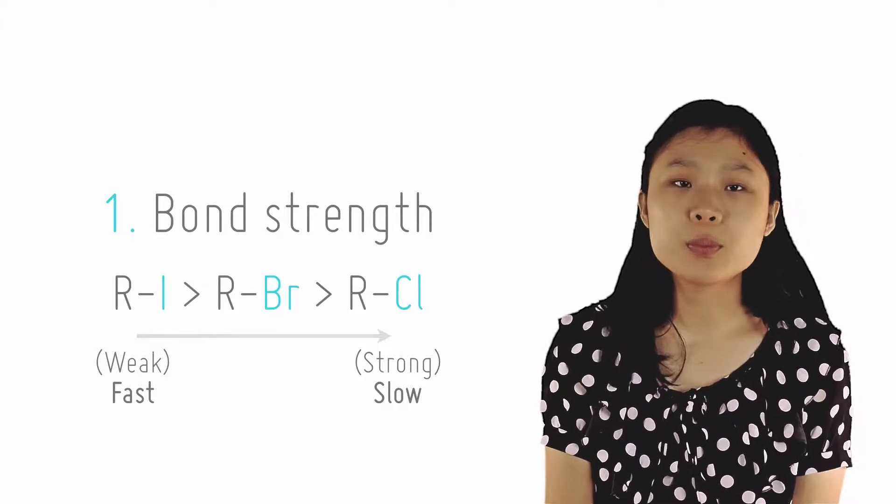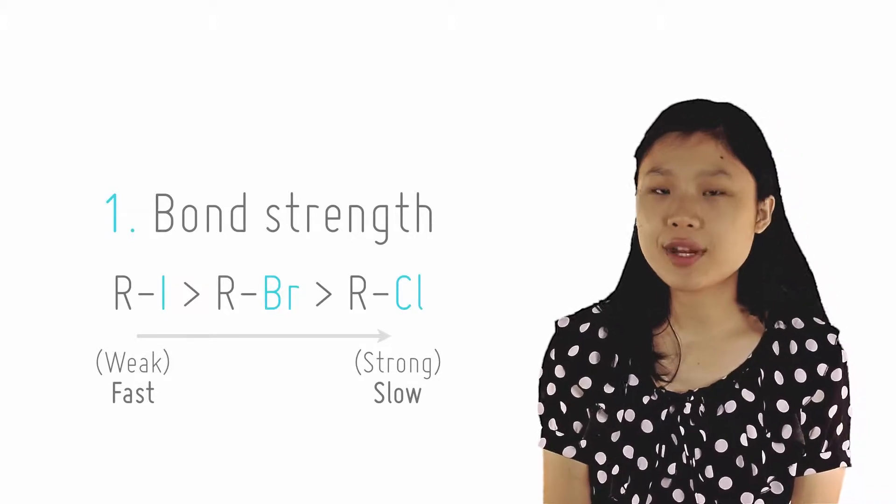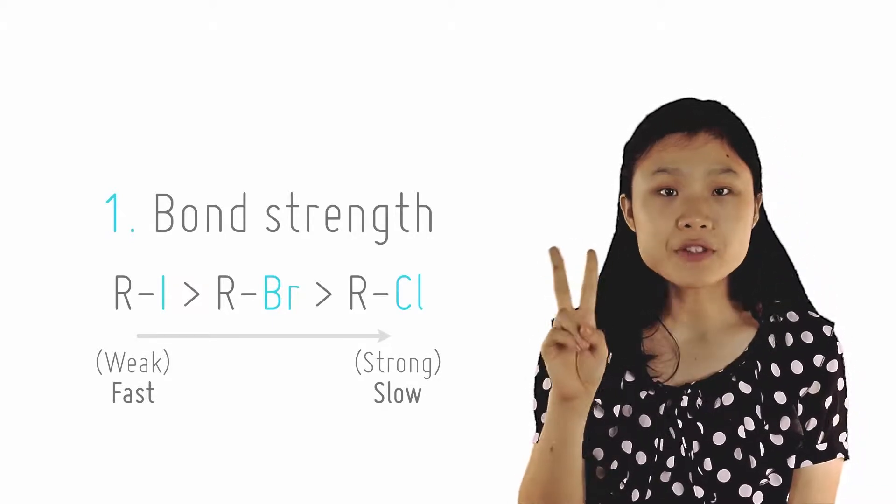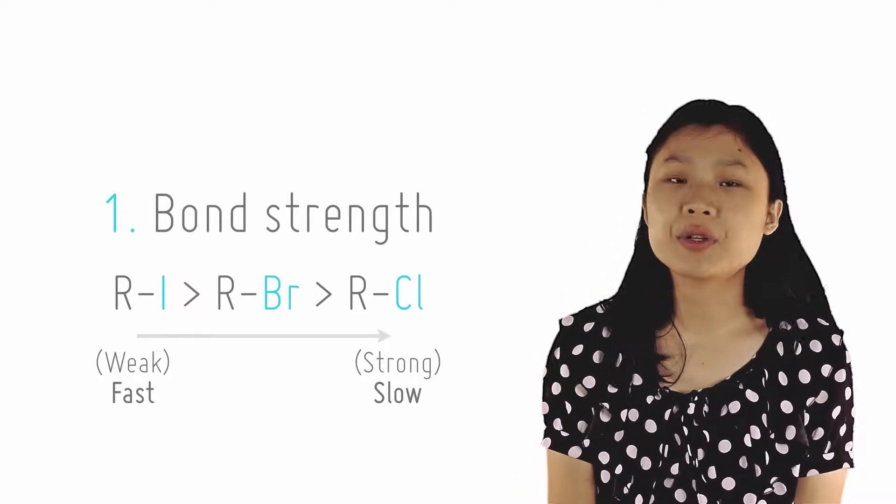R-I is more reactive than R-Br, and R-Cl is the least reactive. The second important factor is the stability of the carbocation intermediate.